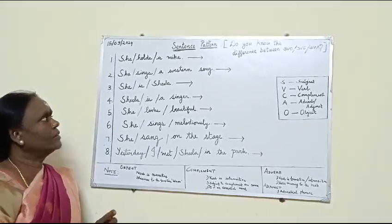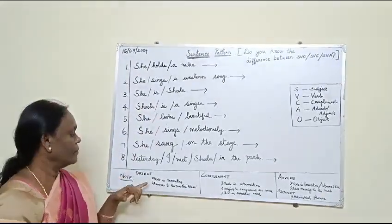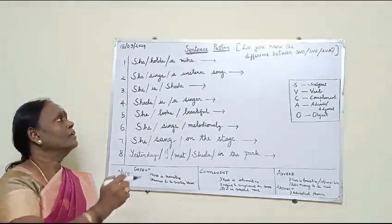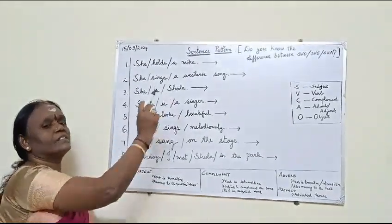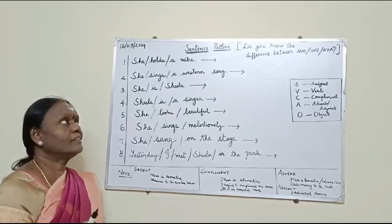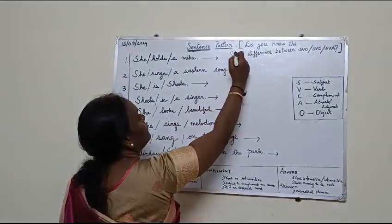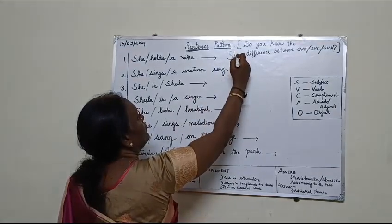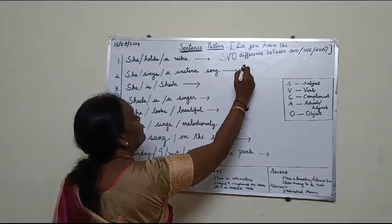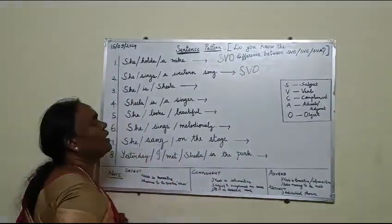Here too we have an object. Just ask the question: what? She sings a western song. A western song is sung by her. So, these two sentences follow the SVO pattern.